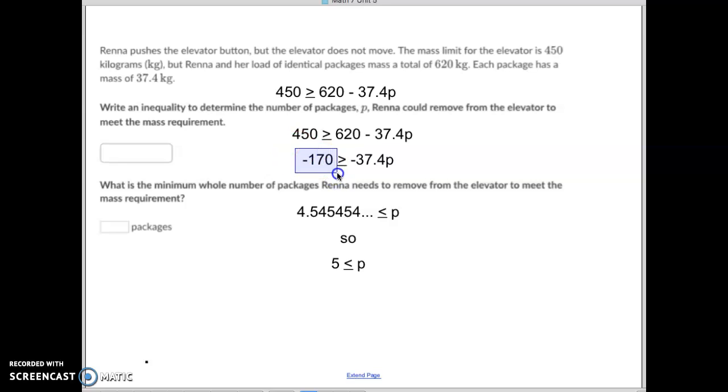And negative 170 divided by 37.4 equals 4.54545454, repeating. And remember, it's P now, the inequality sign is flipped. Now, here's the deal. You can't remove a partial package from the elevator. You can either remove 4, or you could remove 5. But if you remove 4, you have not removed enough weight. So in this case, you need to remove 5 packages in order to meet the inequality that you're less than or equal to 450.